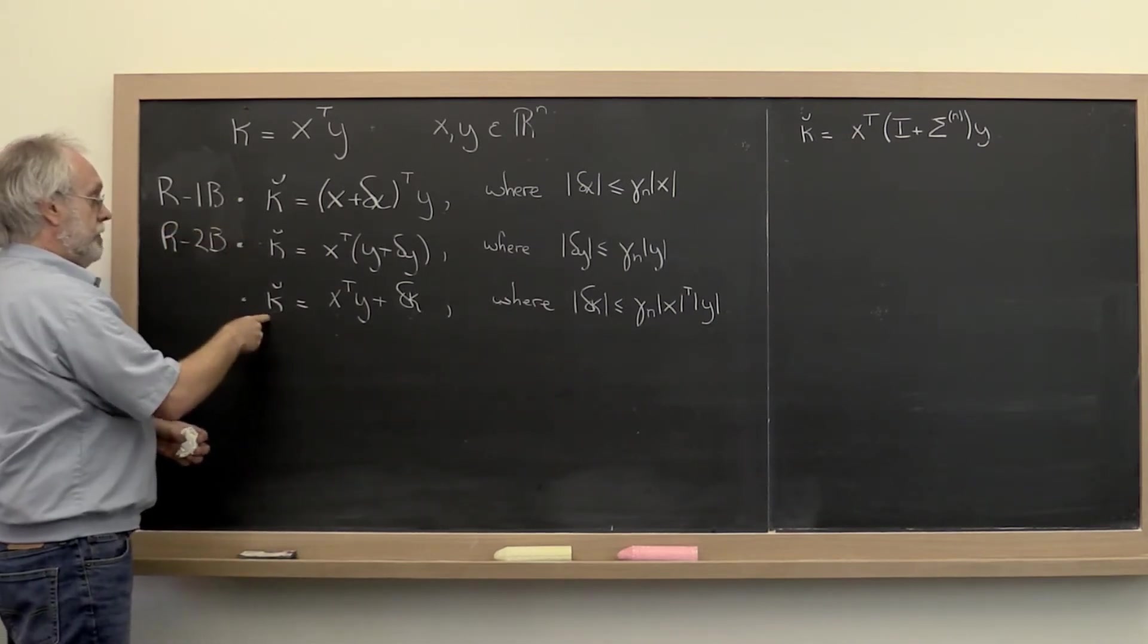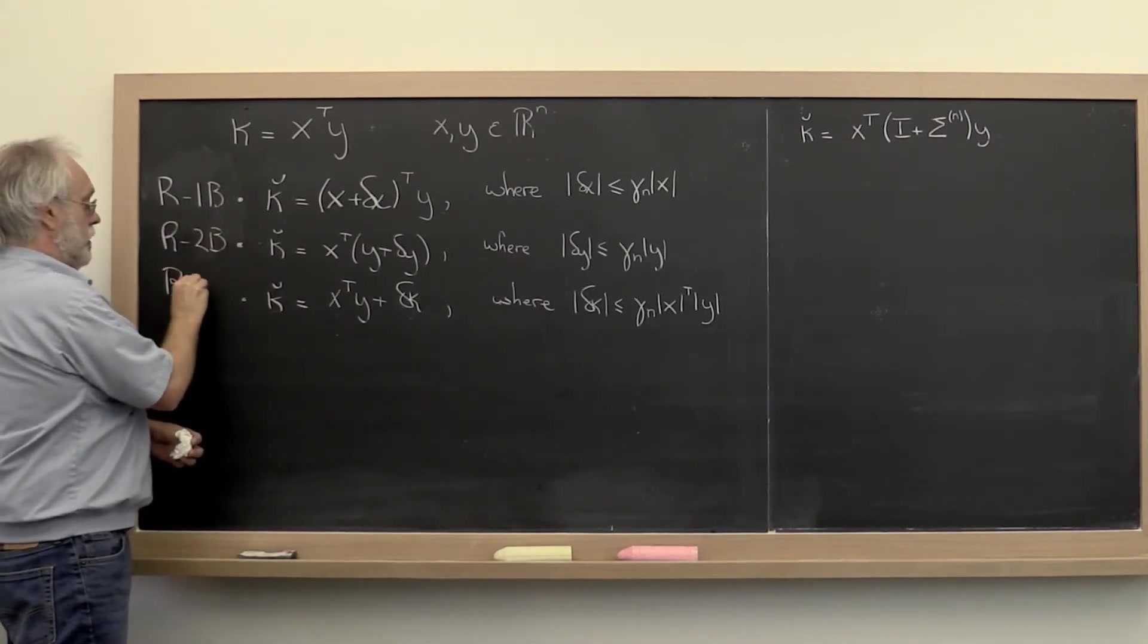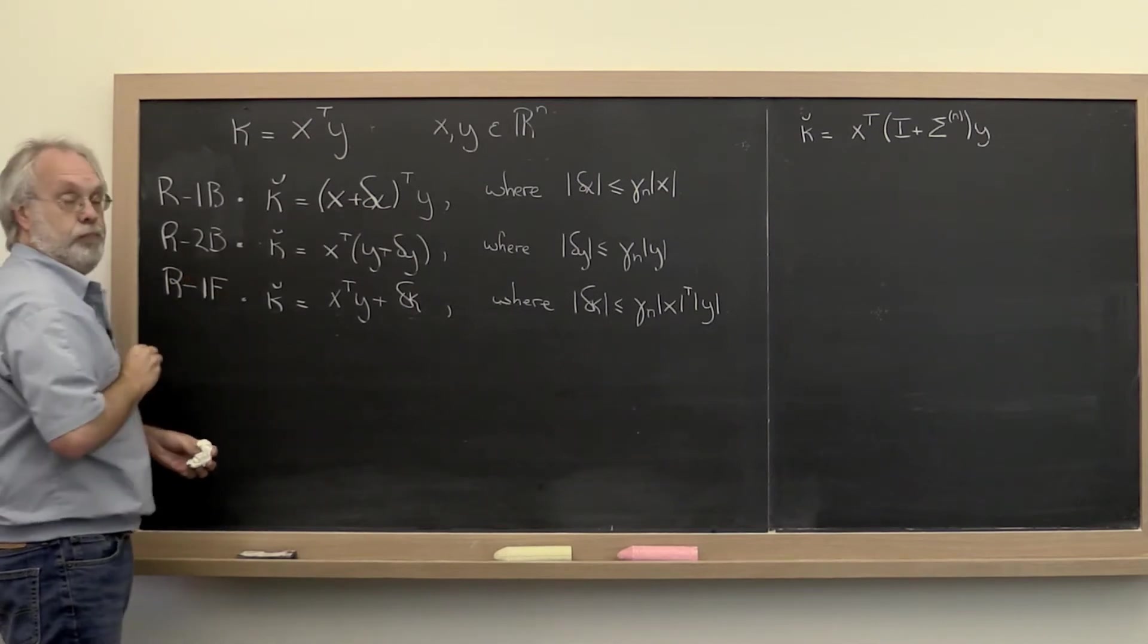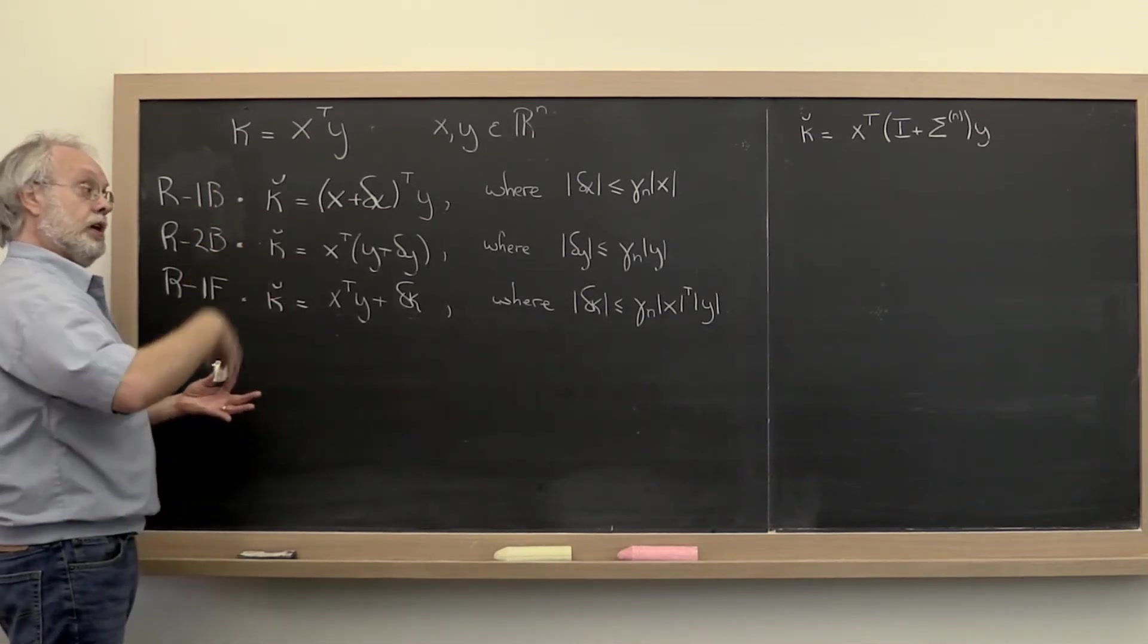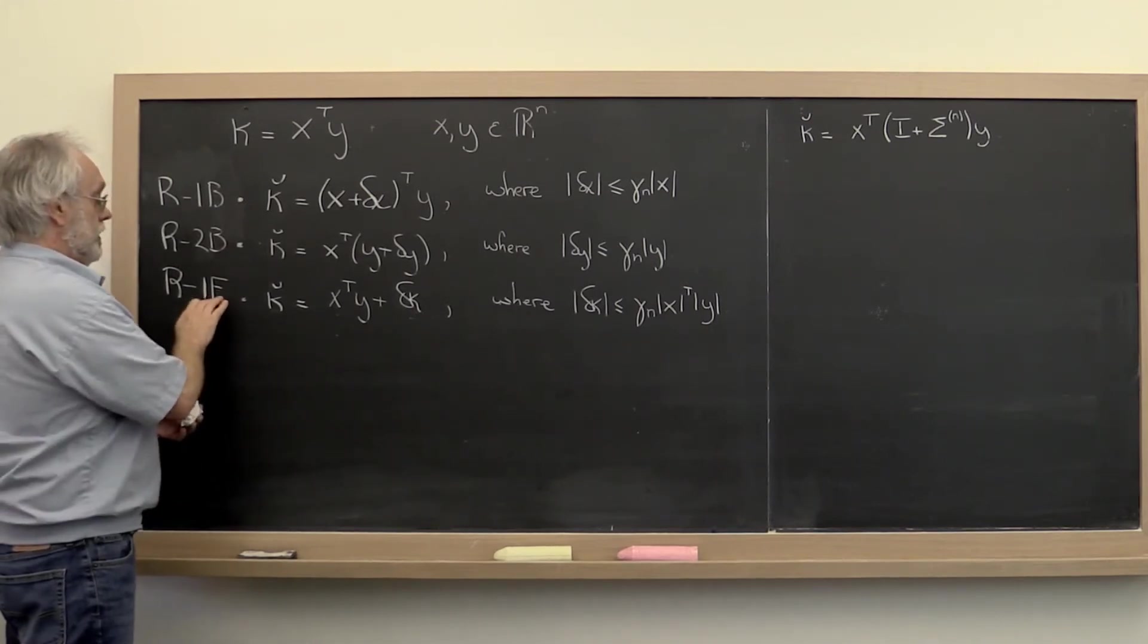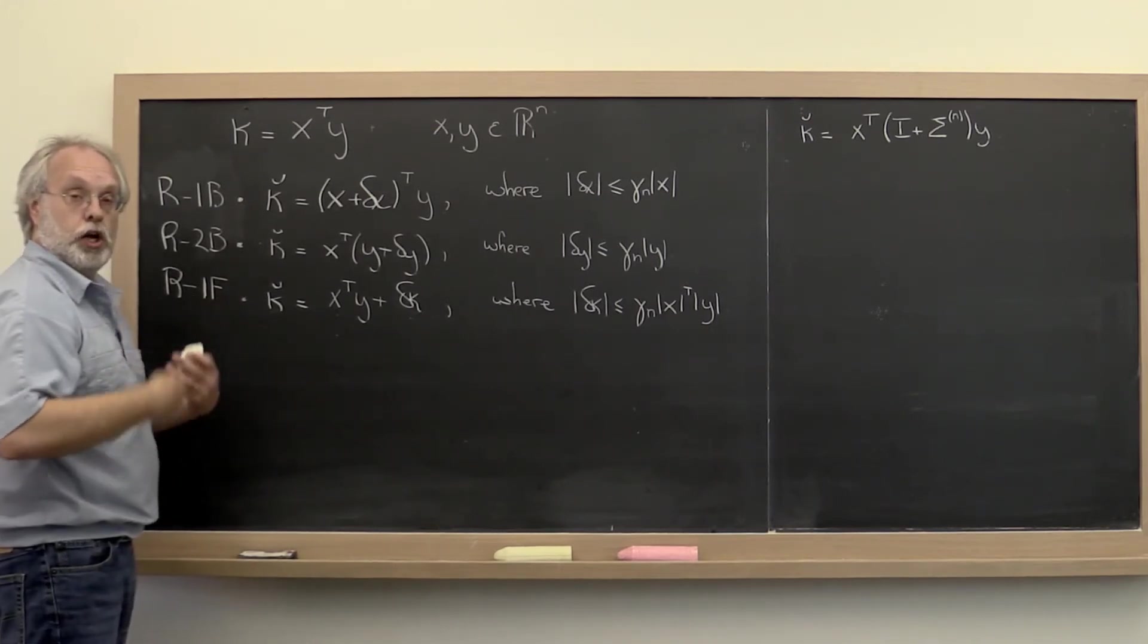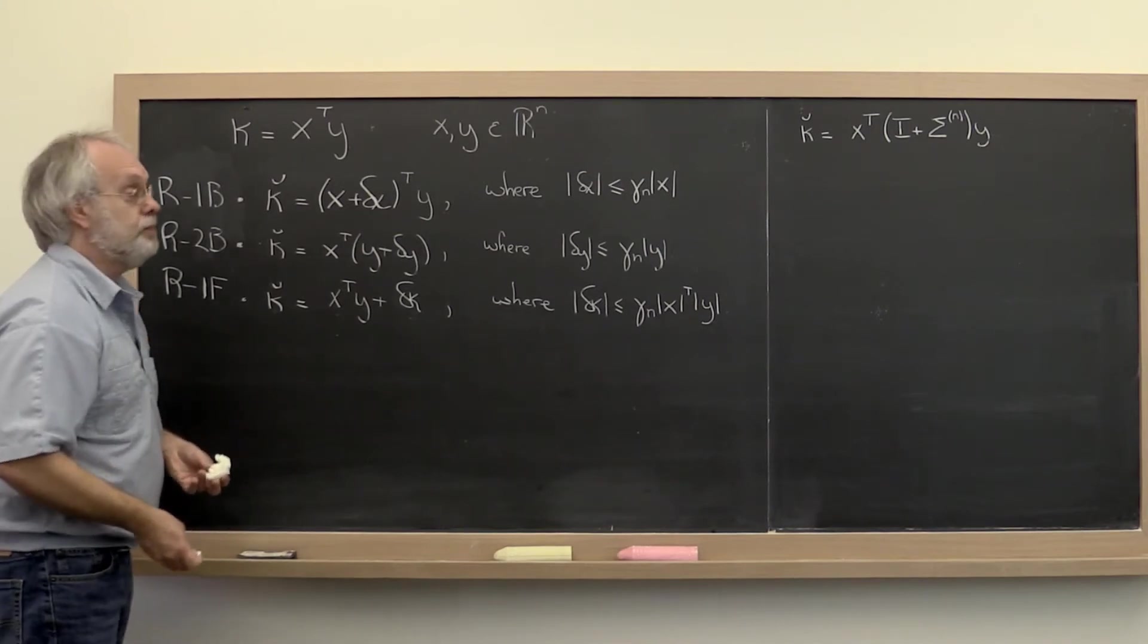And then finally, this is a forward result, so we'll call result 1F. So the B will always mean that we are coming up with a backward error result. The F will always mean that we're talking about a forward error result.